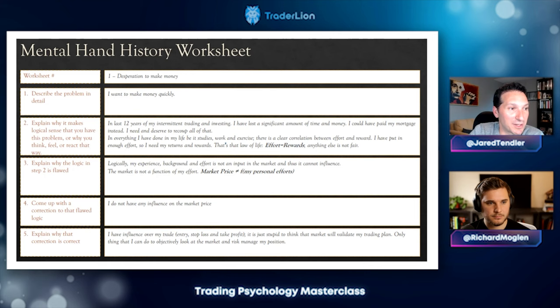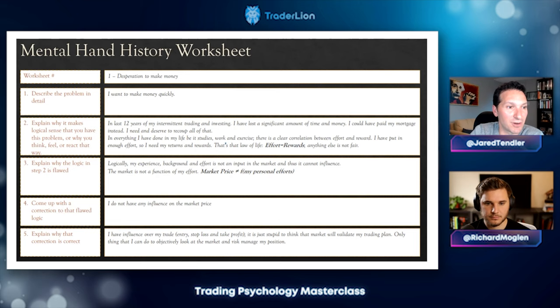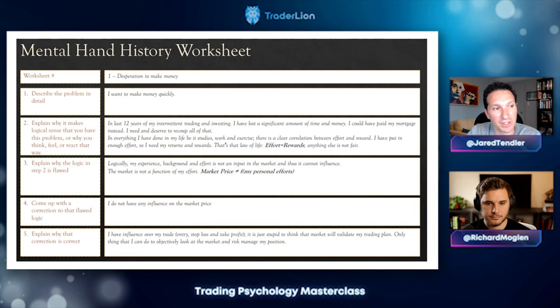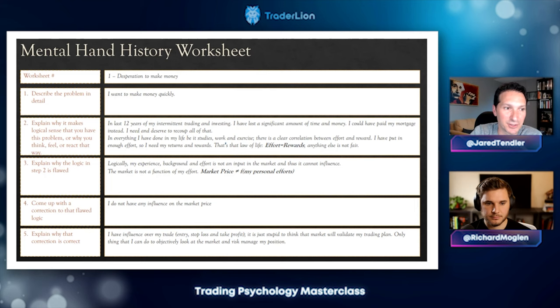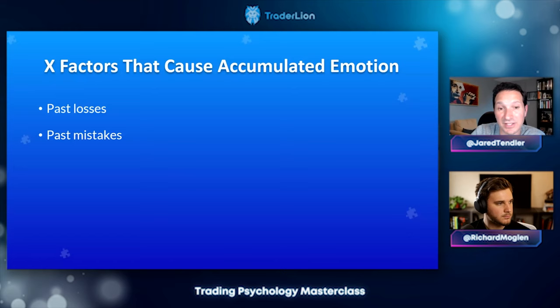Here's a mental hand history that speaks to this. Describe the problem: 'I want to make money quickly.' Explain why that makes logical sense: 'In the last 12 years of my intermittent trading and investing, I've lost a significant amount of time and money — I could have paid my mortgage instead. I need and deserve to recoup all of that. In everything I've done in my life — studies, work, exercise — there is a clear correlation between effort and reward. I've put in enough effort, so I need my returns. That's the law of life: effort equals rewards. Anything else is not fair.' Anything at that level isn't really getting to the likely accumulated emotion around those past losses that needs to be addressed. You might actually need to do a mental hand history on just whatever emotion you have related to those past losses — framing it as 'I'm still holding onto these losses because blank.' That becomes step one of your mental hand history.